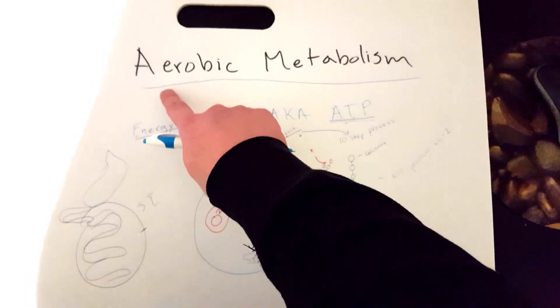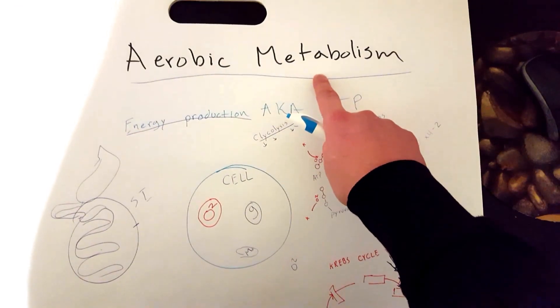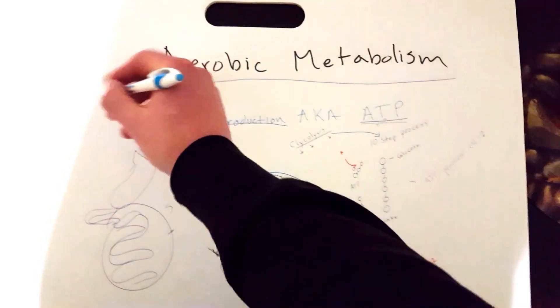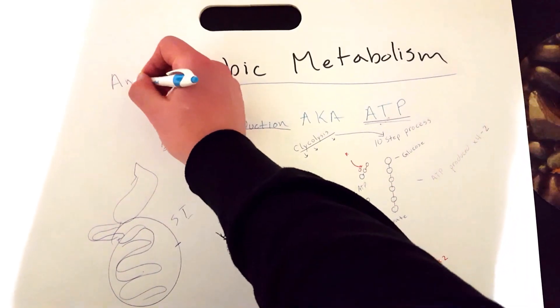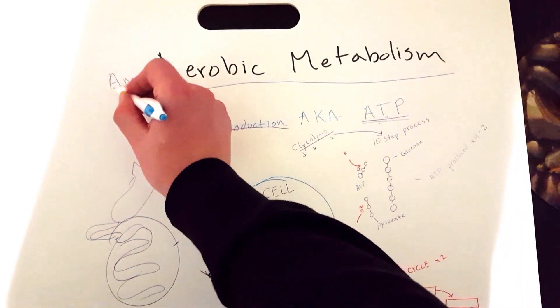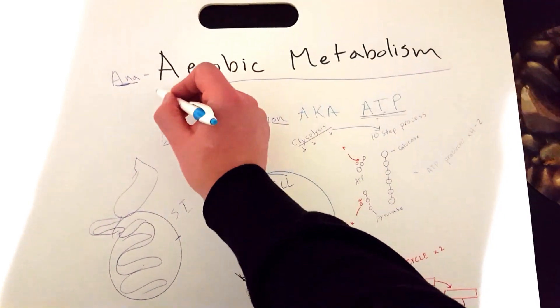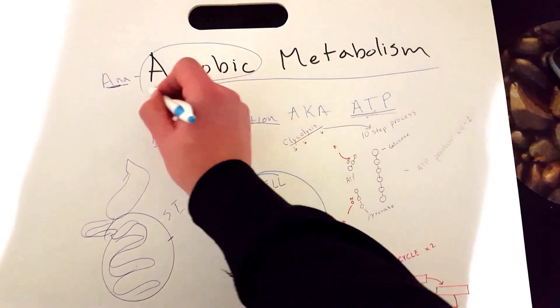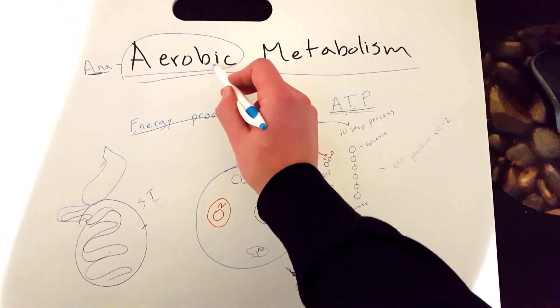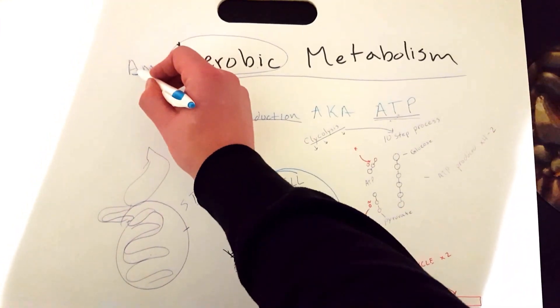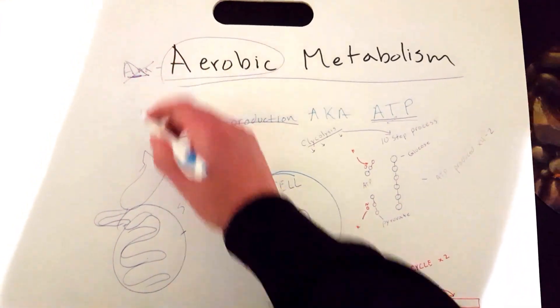We can make it with aerobic metabolism and with anaerobic metabolism. Ana means without oxygen. Aerobic by itself means with oxygen. So we're making energy with oxygen. Ana means we're making energy without oxygen, and I'll make a whole different video on this.